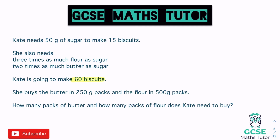To go from 15 biscuits to 60, we multiply by four. So instead of 50 grams of sugar, we need 200 grams of sugar.